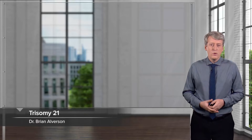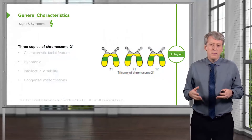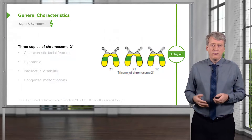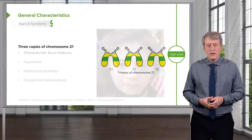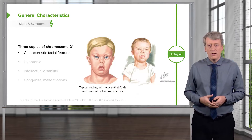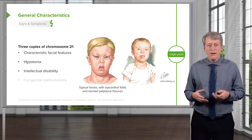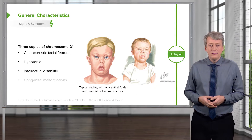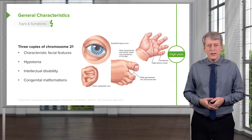In this lecture, we will discuss trisomy 21, or Down syndrome. Trisomy 21 is when a patient has three copies of their 21st chromosome in every cell in their body. These patients have characteristic facial features, like you can see here. They have hypotonia, intellectual disability, and they may have congenital malformations. We'll go through these more carefully in this lecture.